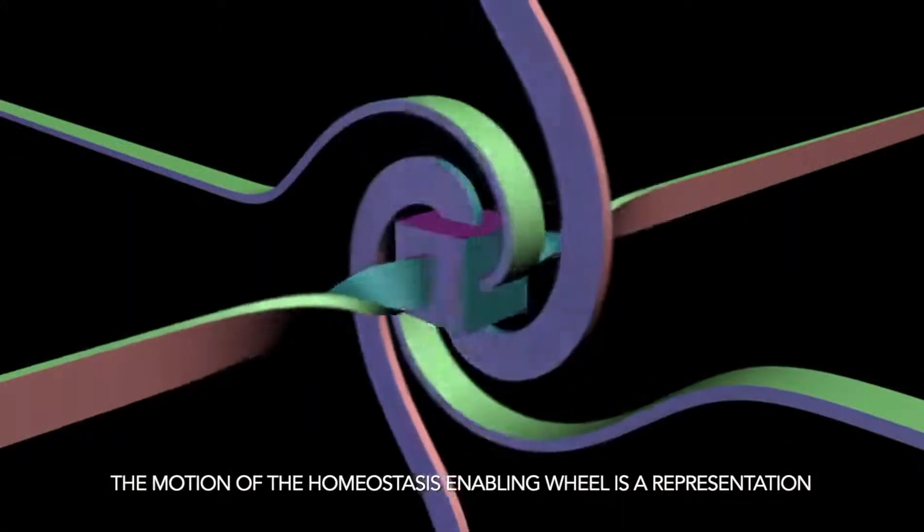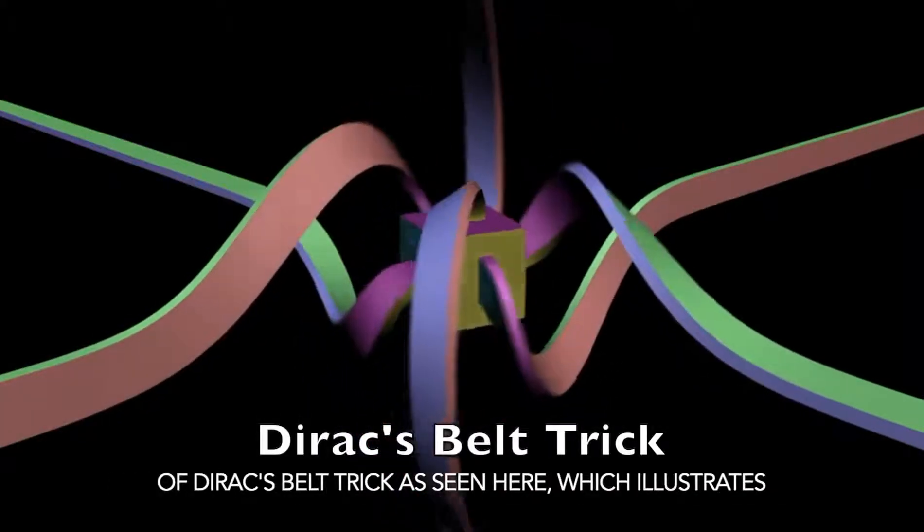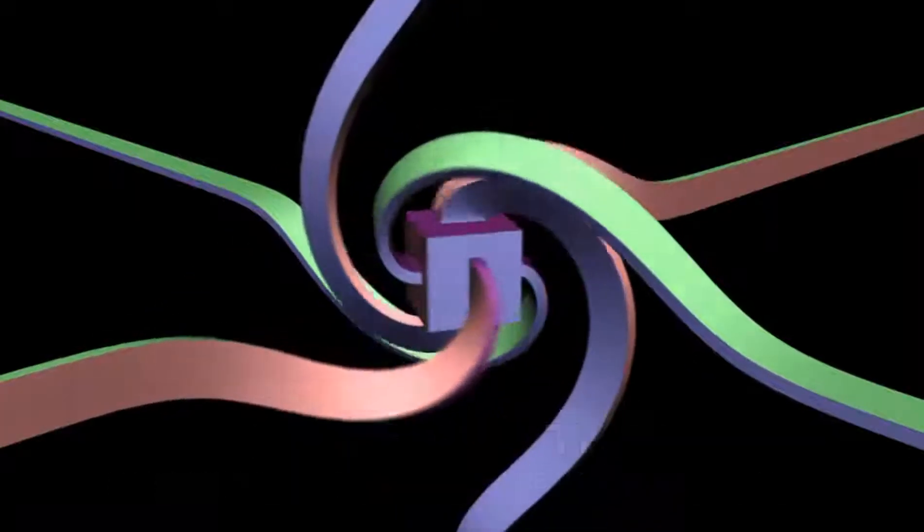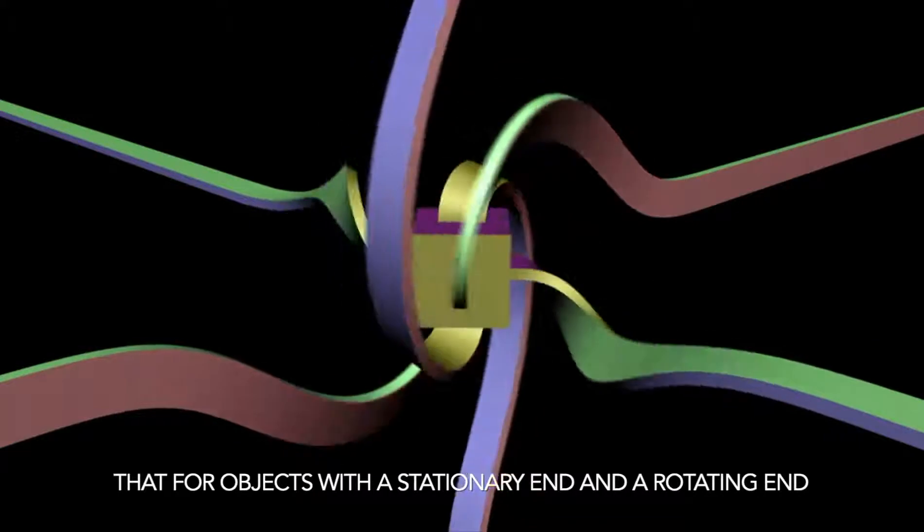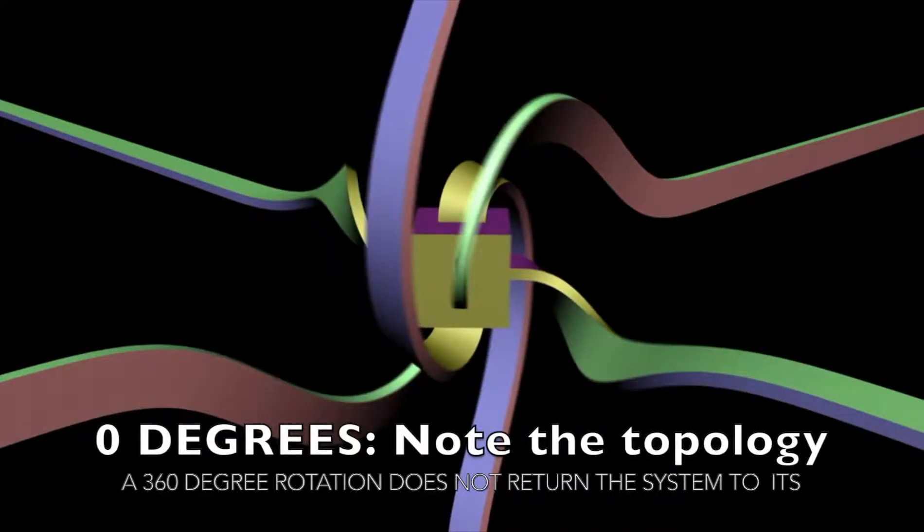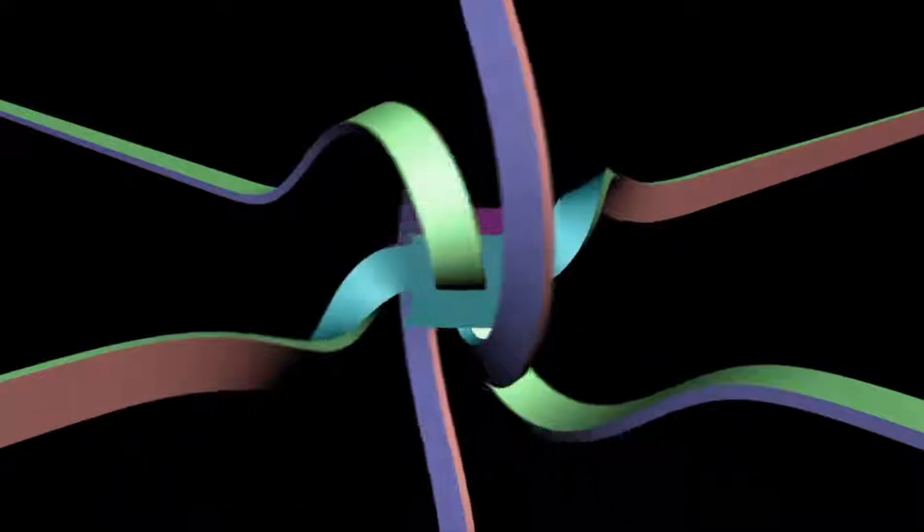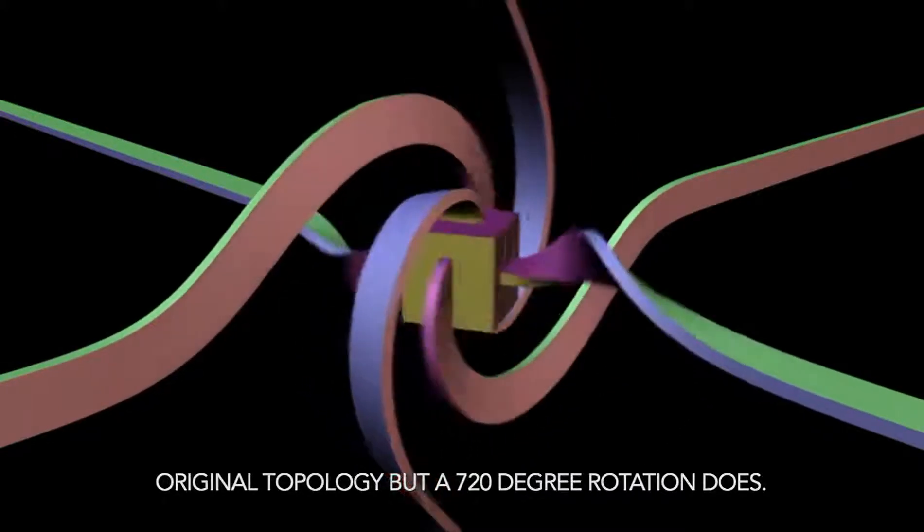The motion of the homeostasis enabling wheel is a representation of Dirac Belt Trick as seen here, which illustrates that for objects with a stationary end and a rotating end, a 360 degree rotation does not return the system to its original topology, but a 720 degree rotation does.